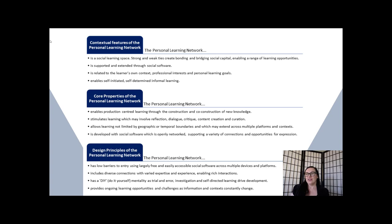When we put the features of the personal learning network all together and compare them to how the features of the connected learning framework are described, we can see that the personal learning network is a social space that's supported and extended through social software where people can connect with others, interact, and access a wide range of information. They can develop strong connections which offer them support and validation, and also connect with people from diverse backgrounds who might contribute new and exciting ideas. A PLN is formulated around the learner's own context, their own professional interests, and their own personal learning goals, and it has properties which reflect those of the connected learning framework in that participants are actively involved in constructing and co-constructing knowledge.